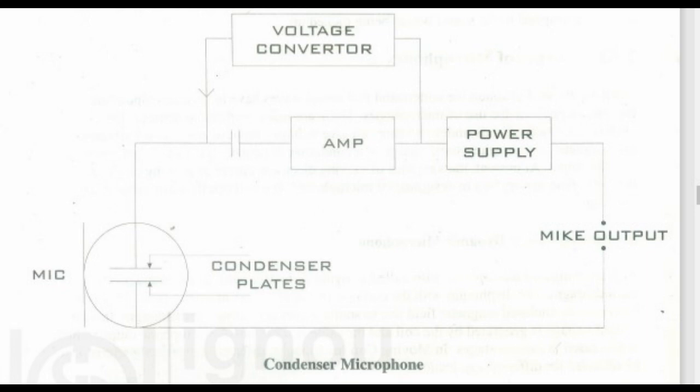1. Moving coil or dynamic microphone. In the moving coil microphone, also called the dynamic microphone, a coil is attached to the diaphragm. The diaphragm with the coil is surrounded by the magnetic field. This coil moves in the enclosed magnetic field due to sound waves activating the diaphragm. In turn, a small voltage is generated by the coil and the same is taken out as microphone output, which is processed in various stages. In moving coil microphones, different directional patterns can be obtained for different applications.